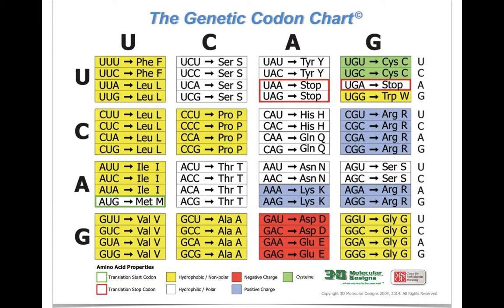You don't have to memorize this chart — it will always be given to you on IB exam questions, tests, and quizzes. But you need to know how to use it. You also have to be able to identify the start and stop codons. The start codon is AUG, which codes for the amino acid methionine (Met), and it is always the first codon in the mRNA. To stop translation, there are three options: UAA, UAG, or UGA. Any of those three will stop translation.